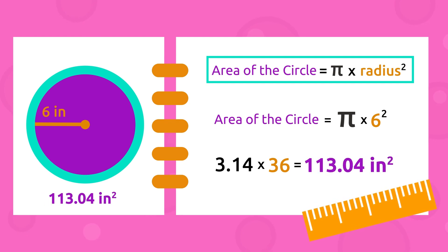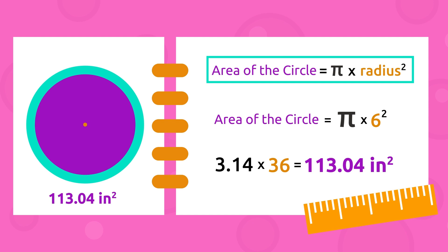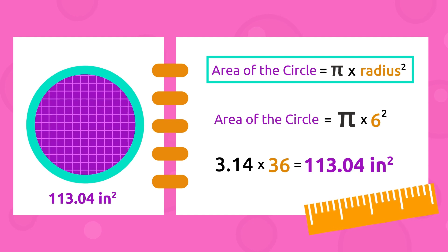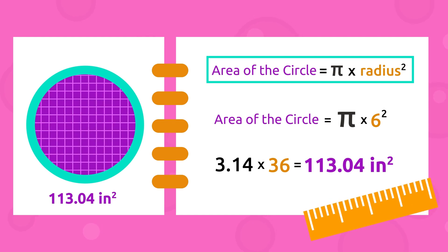The area of the circle equals 113.04 square inches. This means that 113.04 one-square-inch squares can fit inside this circle.